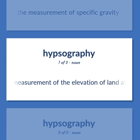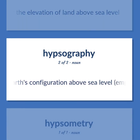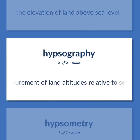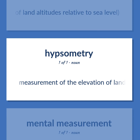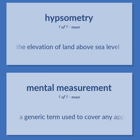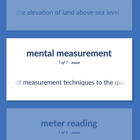Hypsometry: measurement of the elevation of land above sea level. Hypsography: the scientific study of the Earth's configuration above sea level, emphasizing the measurement of land altitudes relative to sea level. Psychometrics: a generic term used to cover any application of measurement techniques to the quantification of mental functions.